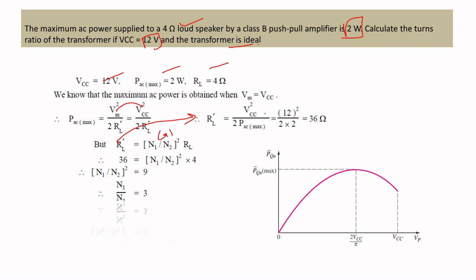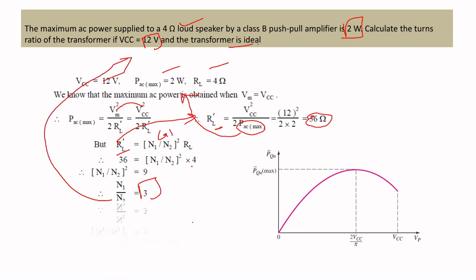With RL_dash = 36 ohms and RL = 4 ohms, the turns ratio is found from RL_dash = (n1/n2)² × RL: (n1/n2)² = 36 / 4 = 9, so n1/n2 = 3. The turns ratio for this problem is 3:1.